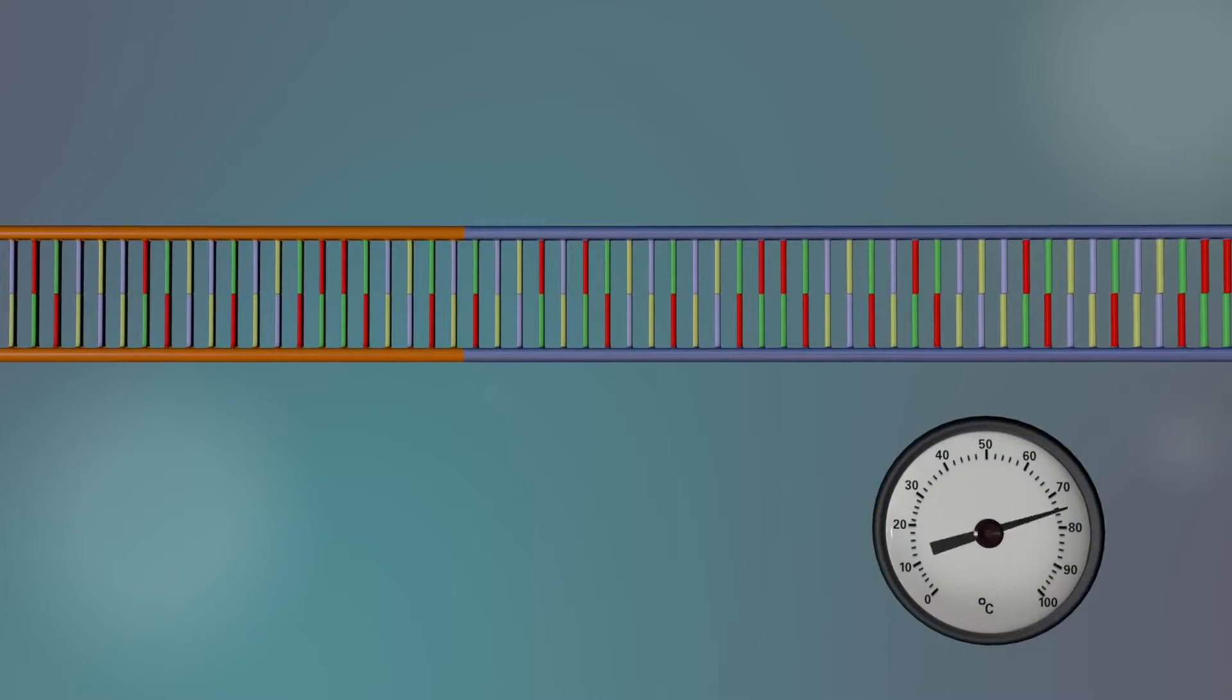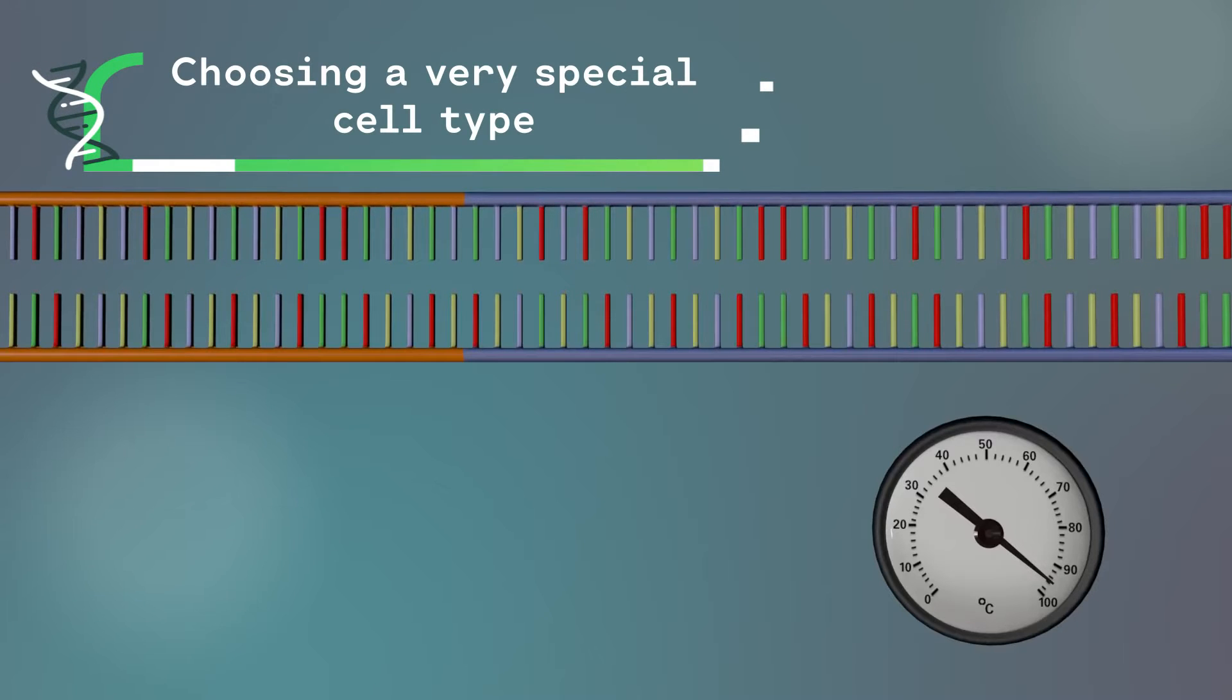Two key factors made the completion of the human genome possible. First, choosing a very special cell type.